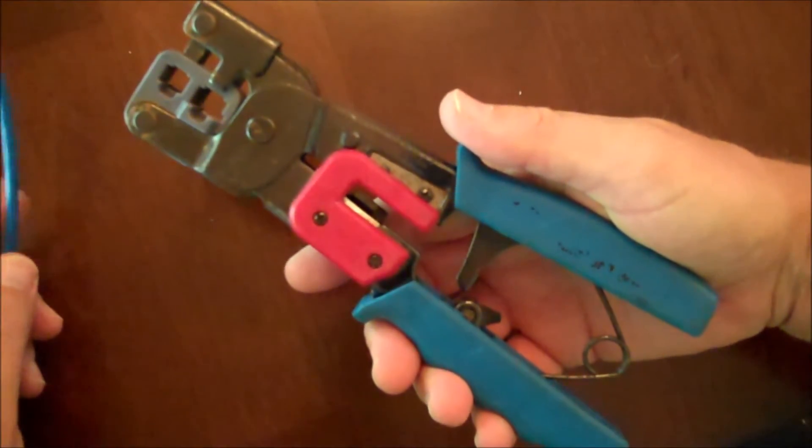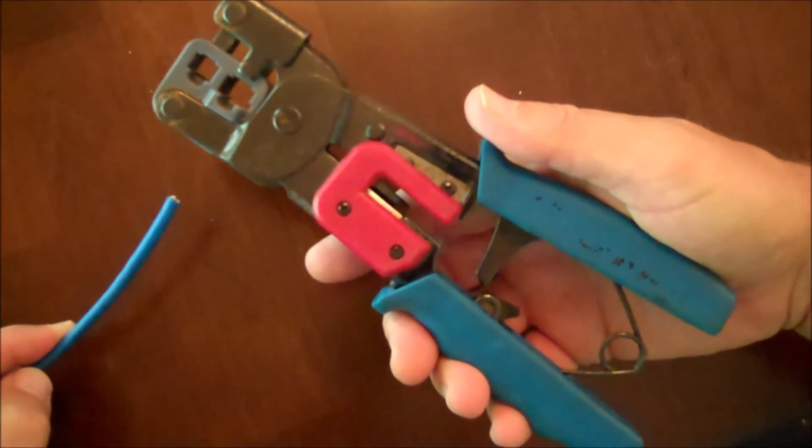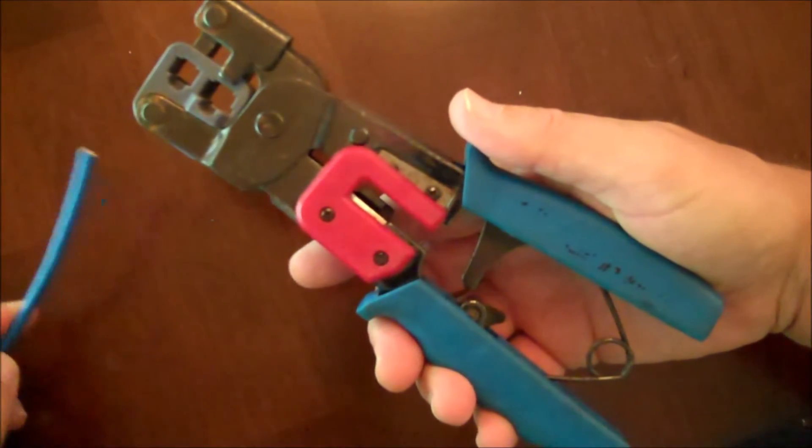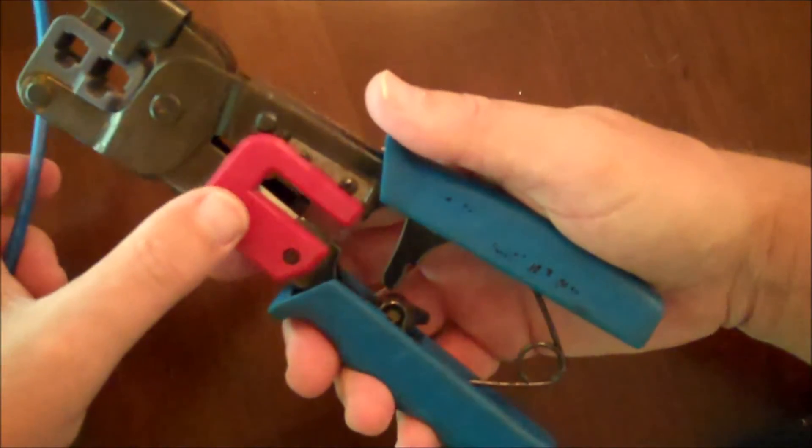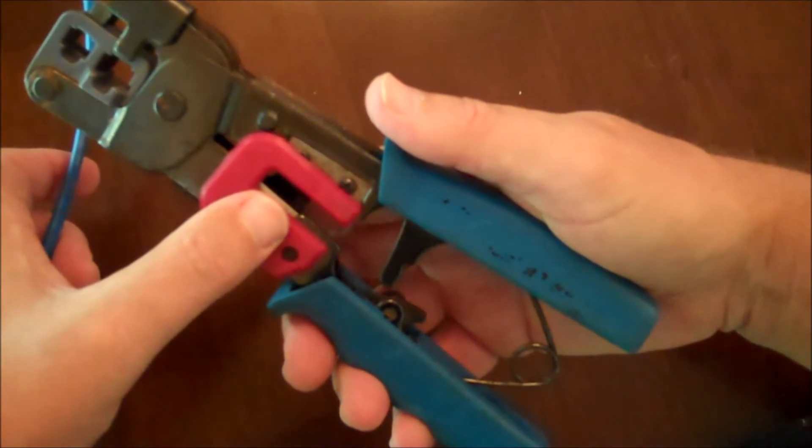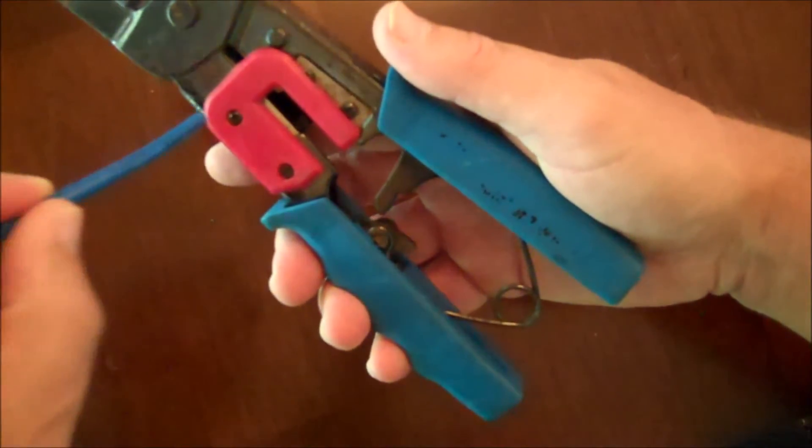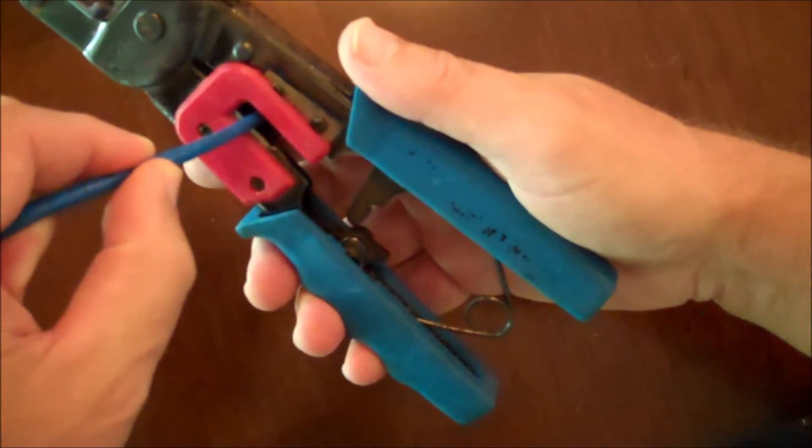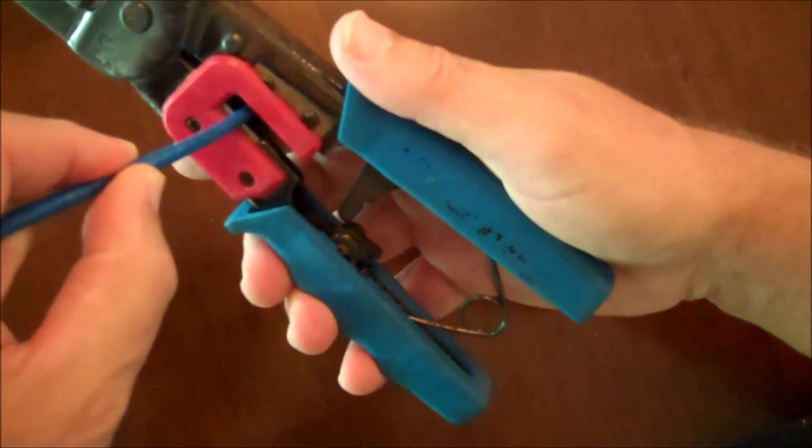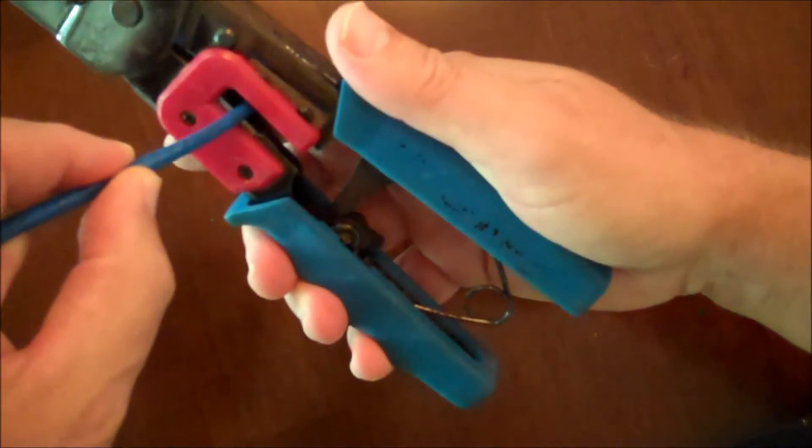Now I'm going to demonstrate the proper way to strip the blue jacket off the Cat5 wire. With the tool in my right hand, if you look right in here there's a special cutting blade that allows you to properly seat the wire into the tool and that blade is going to cut the jacket, the blue jacket, at the proper length.